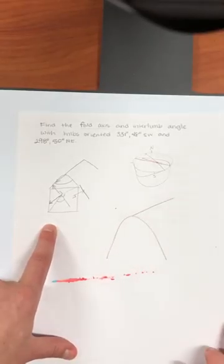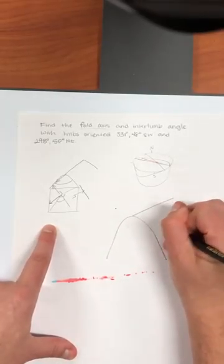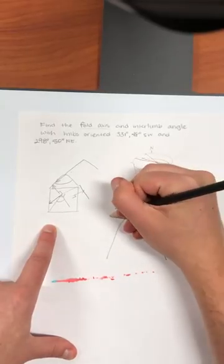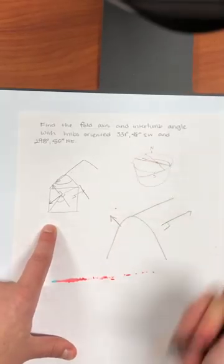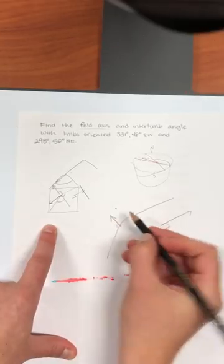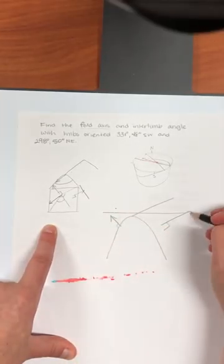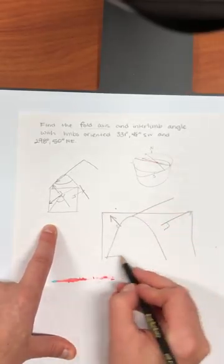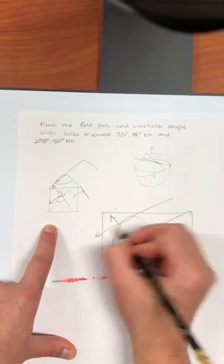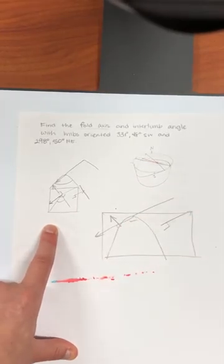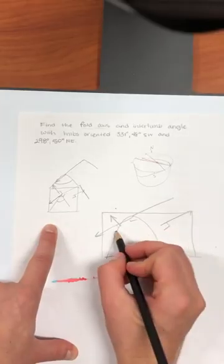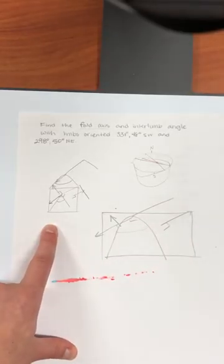Let's see if I can draw this again. If we draw a fold like this, here's a normal, here's a normal. The plane that contains those two normals is perpendicular to the fold axis. And in that plane, we can accurately count out what the interlimb angle is. So let's see this on a stereonet.